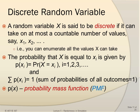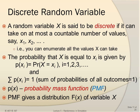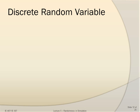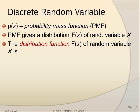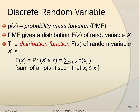This p(x) is called the probability mass function, or PMF. For discrete random variables, the PMF gives us the distribution F(x) of the variable x. The distribution function F(x) of a random variable x is computed as the probability of x being less than or equal to some given value x. For a discrete random variable x, you sum up all the masses — the probabilities corresponding to xᵢ's — where the xᵢ's are less than or equal to x.